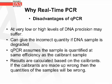For some of the disadvantages of qPCR: at very low or high levels of DNA, the precision may suffer. The system can give an incorrect quantity if the DNA sample is degraded. Also, qPCR assumes the sample is quantified at the same efficiency as the calibrant sample, and results are calculated based on the calibrants. So if the calibrants are made up wrong, then the quantities of the samples will be wrong.